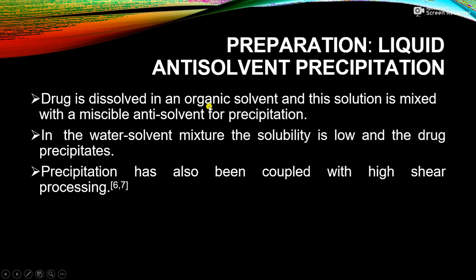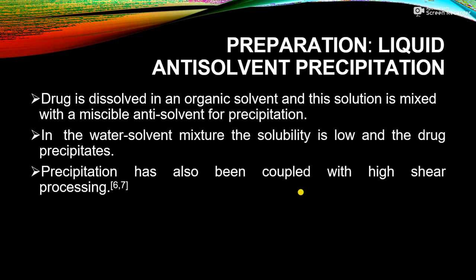In the liquid anti-solvent precipitation method, the drug is dissolved in an organic solvent and then this solution is mixed with a miscible anti-solvent to cause precipitation. In the water-solvent mixture, the solubility is low, causing the drug to precipitate. The precipitation is also covered with high shear processing.